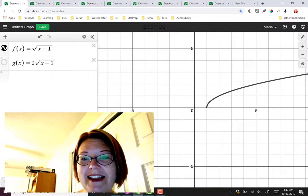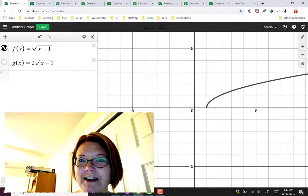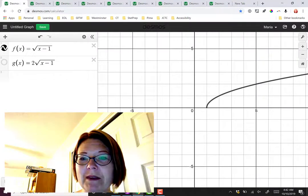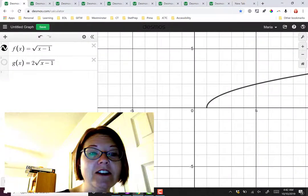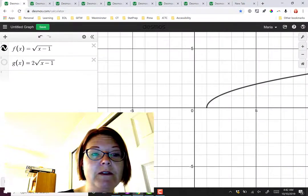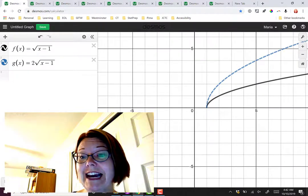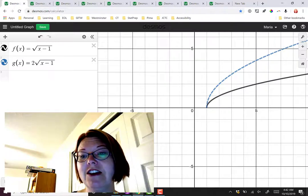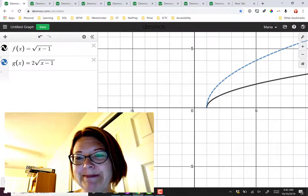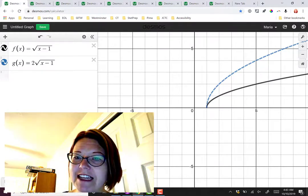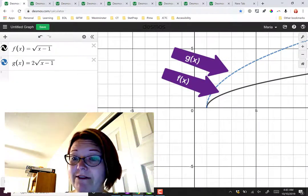Over in Desmos, I have the graph of f(x) equals the square root of x minus 1. And I'm now going to include the graph of g(x) equals 2 times the square root of x minus 1. In Desmos, I'm going to be drawing these as dashed graphs simply so you can tell them apart a little easier with the technology. Our graph of g(x) is exactly twice as high as our graph of f(x).